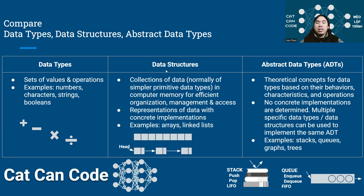So what are data structures? Data structures are the collection of data, normally of simpler primitive data types, in computer memory for efficient organization, management, and access. When we talk about data structures, we want to discuss the grouping of multiple data into a collection so that we can store it efficiently in computer memory and also make it very easy for us to organize, manage, and access these values. When we talk about data structures, we want to refer to them as the representation of data with concrete implementation. It's not an arbitrary concept or something abstract.